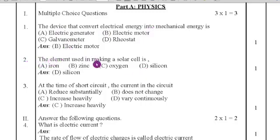Second question, the element used in making a solar cell is iron, zinc, oxygen, silicon. Silicon is used to make the solar cell. So, option D is the right answer.